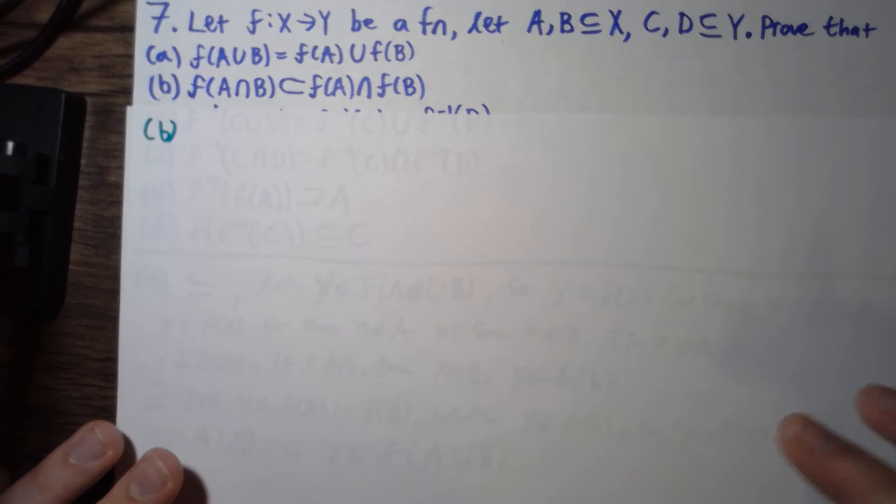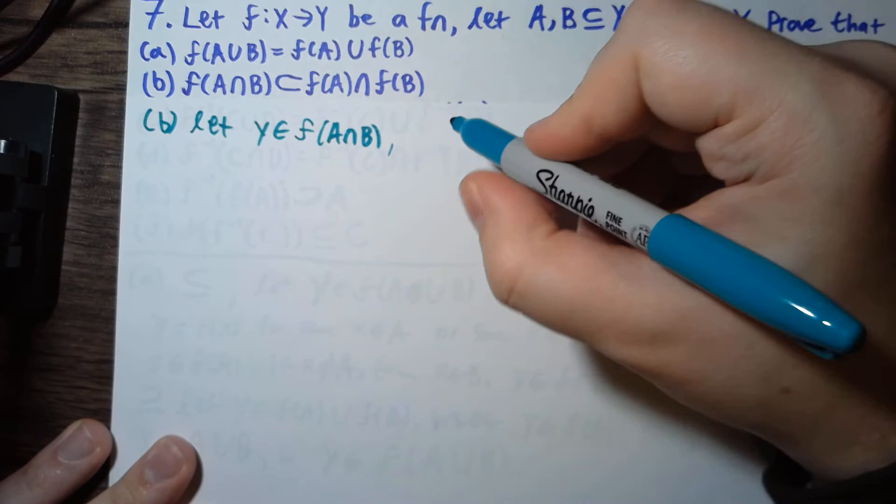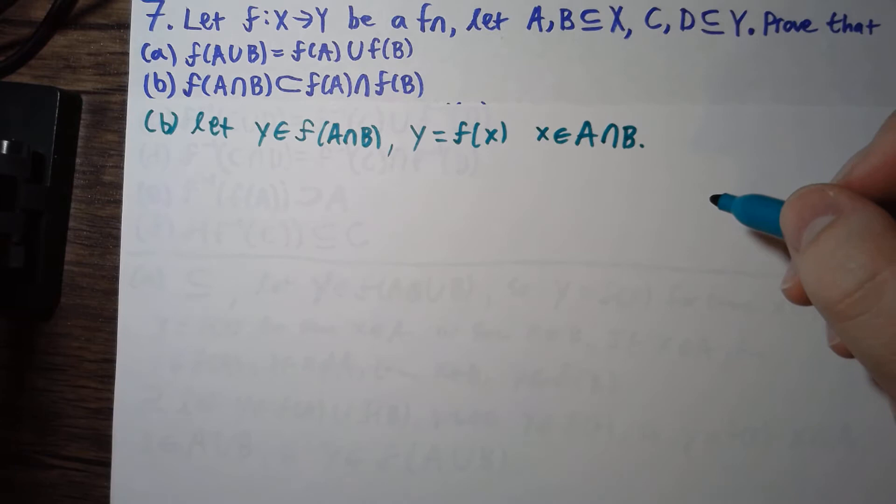For part b, we just want to do a single direction for intersections. We say let y be in f of A intersect B. So we have y is equal to f of x, where x is in A intersect B.